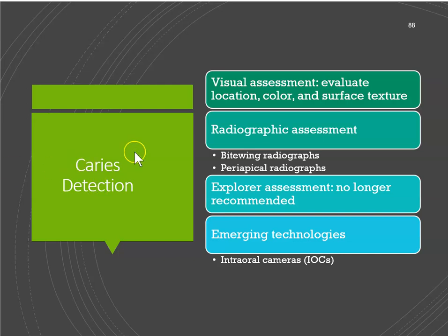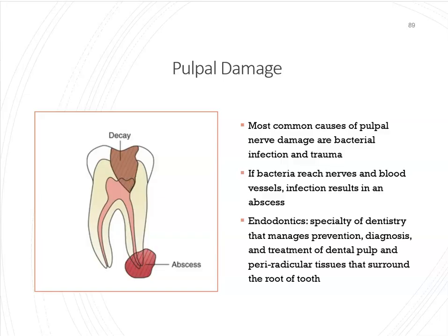For caries detection: do a visual assessment and check for location, color, and surface texture. Radiographs are huge — bitewings and PAs are excellent tools. The explorer is no longer recommended because you can transfer cariogenic bacteria to other areas. Intraoral cameras are a great tool — take pictures of all areas you're concerned about before the dentist comes in for a check. If a big cavity has progressed through the pulp and creates an abscess, a root canal is needed, which is even more costly.